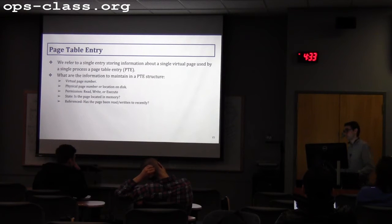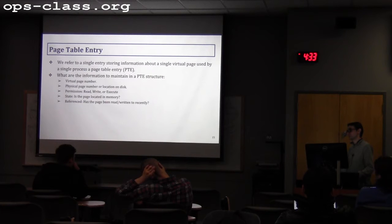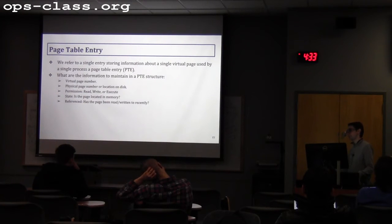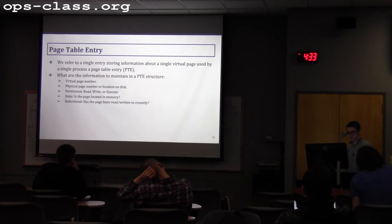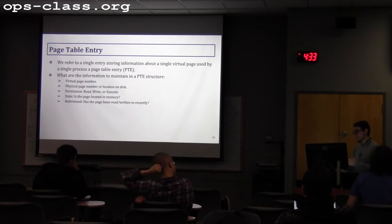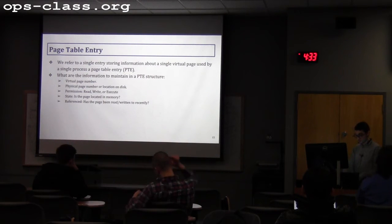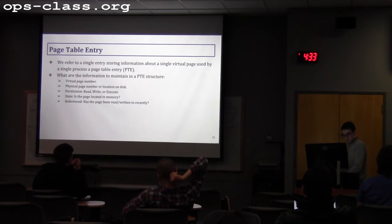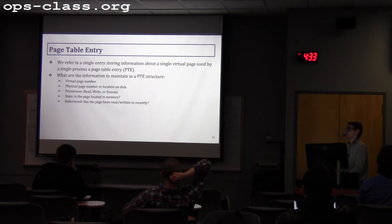One of the problems with dumbvm was that it only assumed two segments. You don't have a variable number of segments with dumbvm, and that's what you need to implement this time — a variable number of segments.